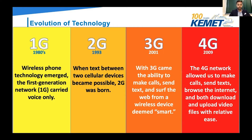To help understand the difference between 4G and 4G LTE, let's think of Apple products. We had the iPhone 5 and the iPhone 5S. The iPhone 5S is a slight improvement from the iPhone 5, but it's not good enough to be an iPhone 6 yet. Think of 4G and 4G LTE just like that — 4G LTE is a slight improvement from 4G, but it's not good enough to be 5G yet.